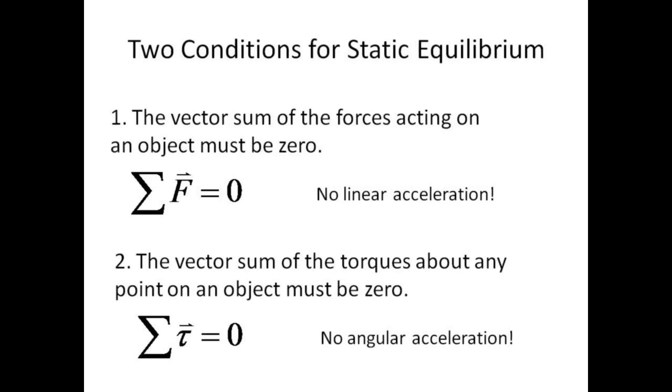For an object to be in static equilibrium, two conditions must be met. The vector sum of the forces must be zero to prevent any linear accelerations, and the vector sum of torques about any point on the object must be zero to prevent angular accelerations.